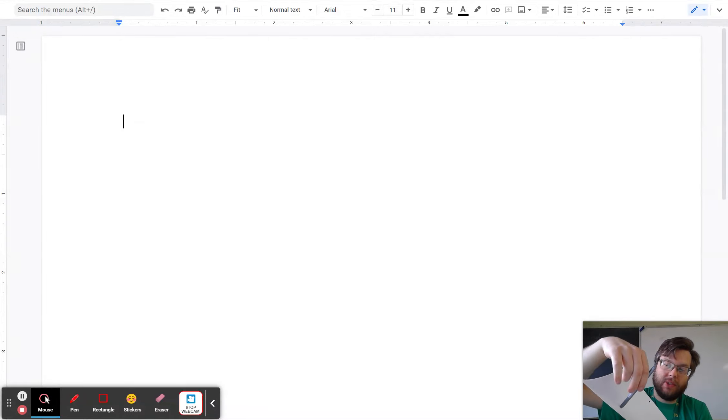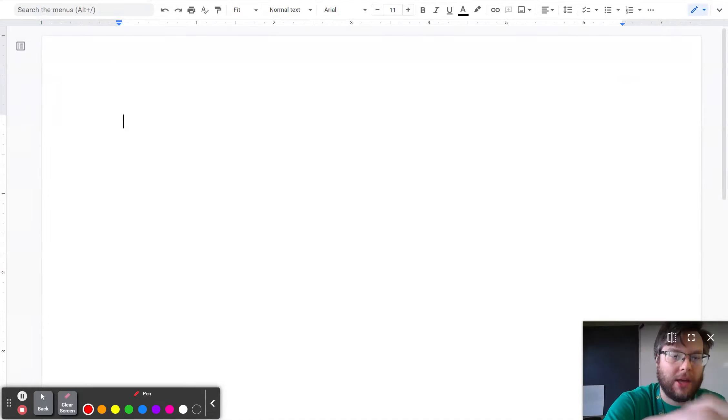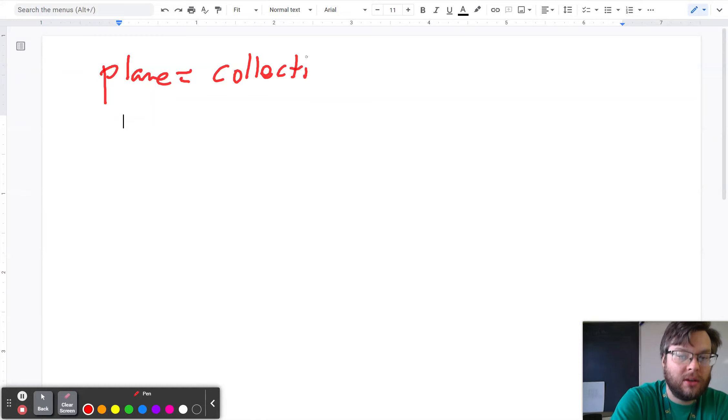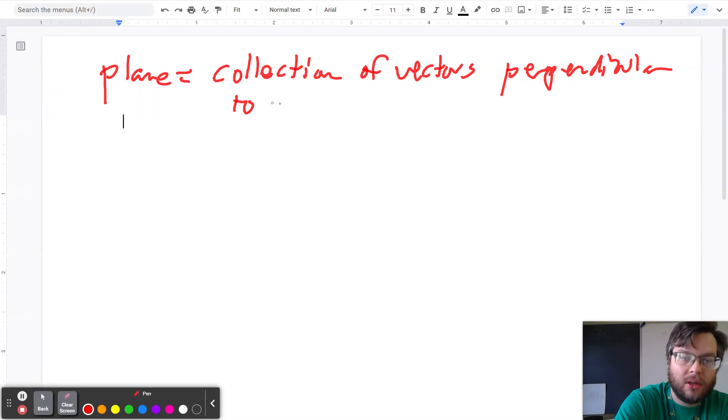When you've got a flat surface, the normal vector is perpendicular to every other vector that's in the plane. So here's how you should think of a plane: a plane is a collection of vectors perpendicular to a given normal.